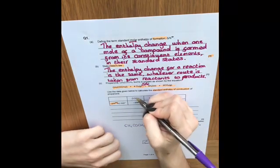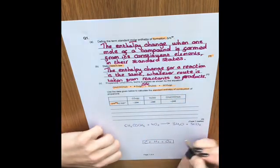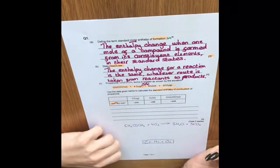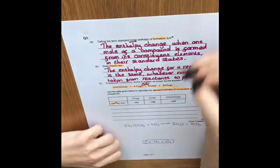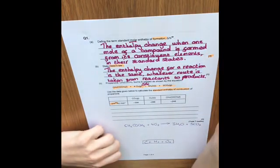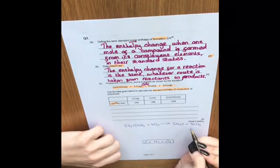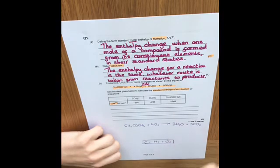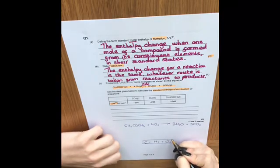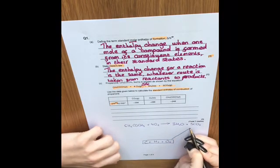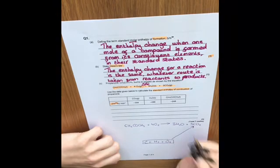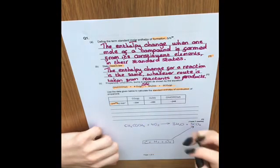So our first one in the table is CO2, which is on this side. Like we said, it's a standard enthalpy of formation - we've just done the definition. It's the enthalpy change when one mole of a compound is formed from its constituent elements. So we're going from the constituent elements to the compound, so our arrow should be pointing upwards.